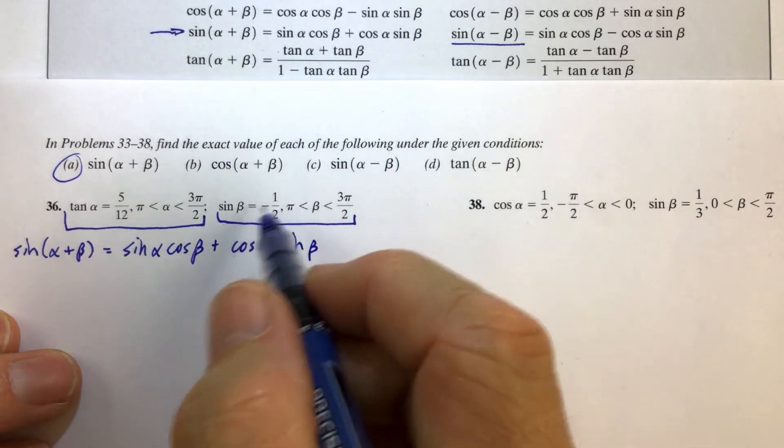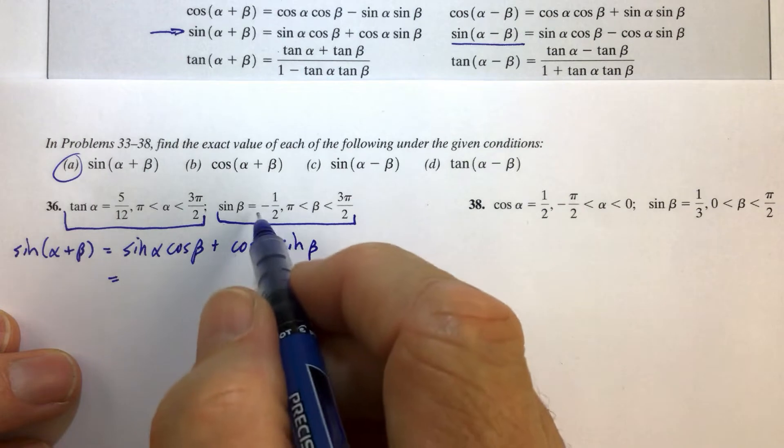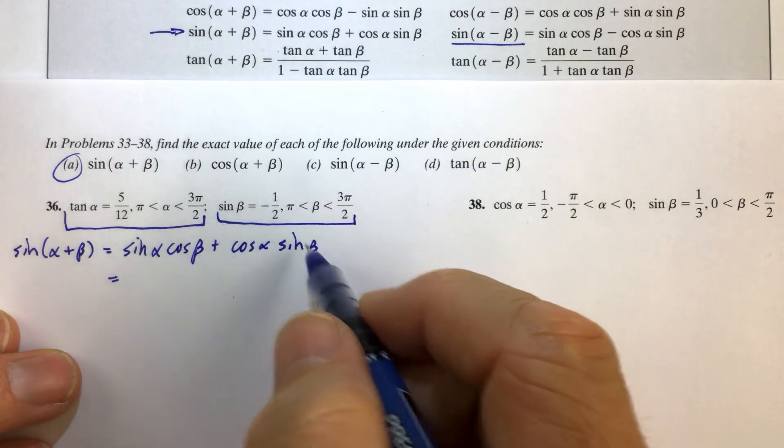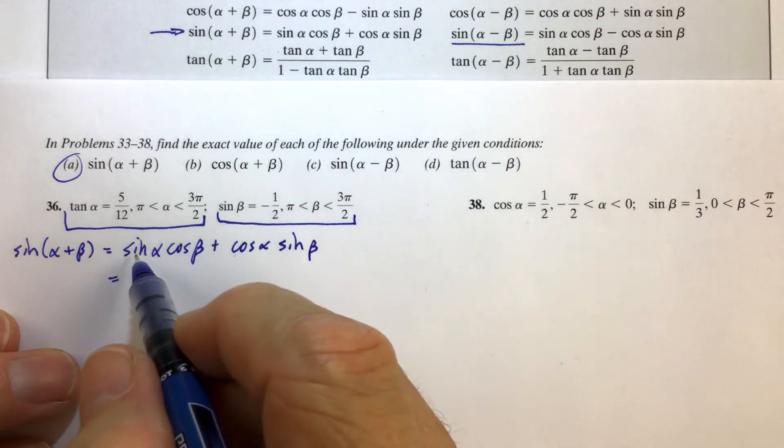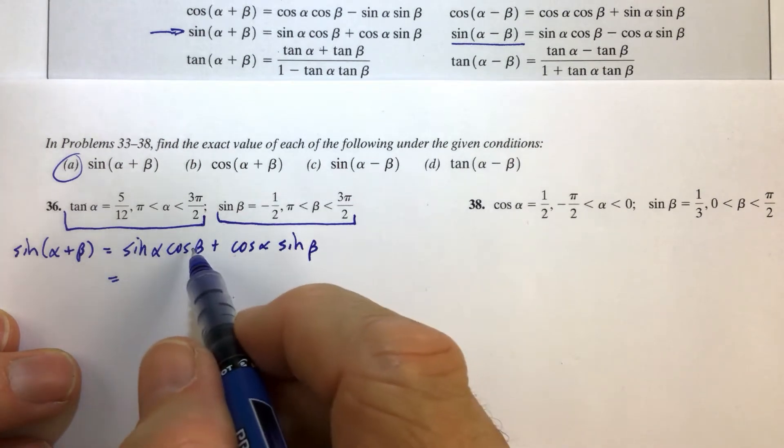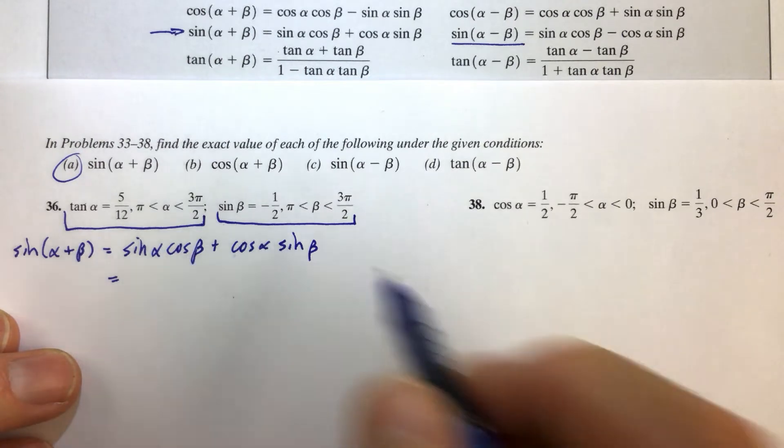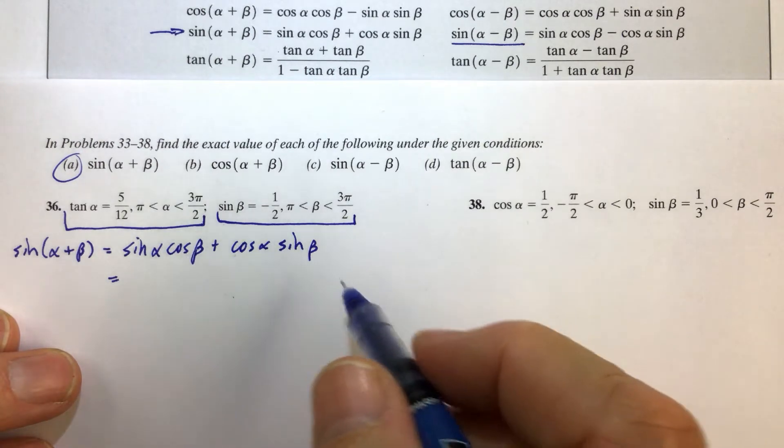Well, we're already given a couple of these. We're actually just given one. We're given the sine of beta equals negative 1 half. So we'll put a negative 1 half in there when we get there, but we need the sine of alpha, we need the cosine of beta, and we need the cosine of alpha. So, well, how do we do that?